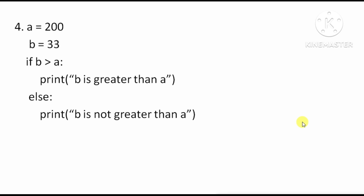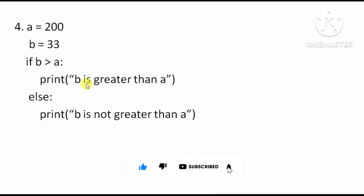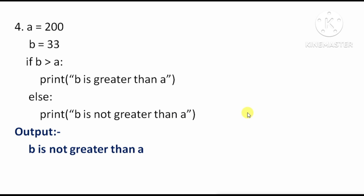Next program: here a has the value 200 and b has the value 33. The condition is: if b is greater than a. Since b is not greater than a, the first block will not print. Instead, 'b is not greater than a' will print. So the output is: b is not greater than a.